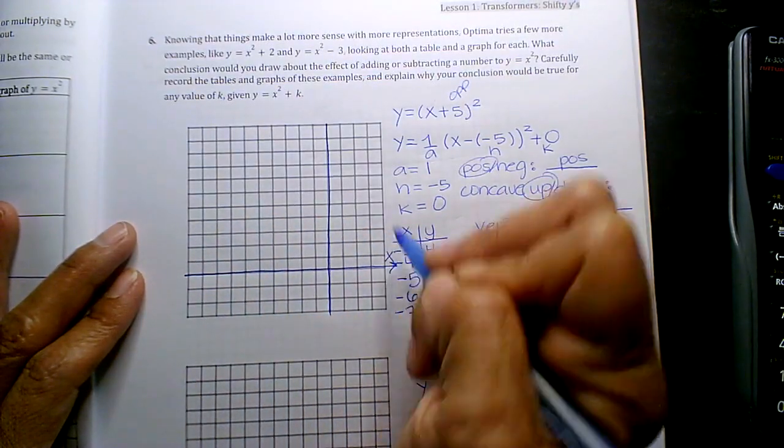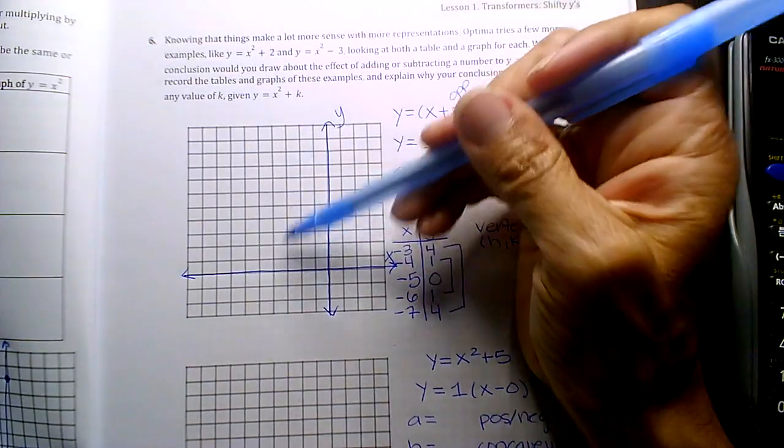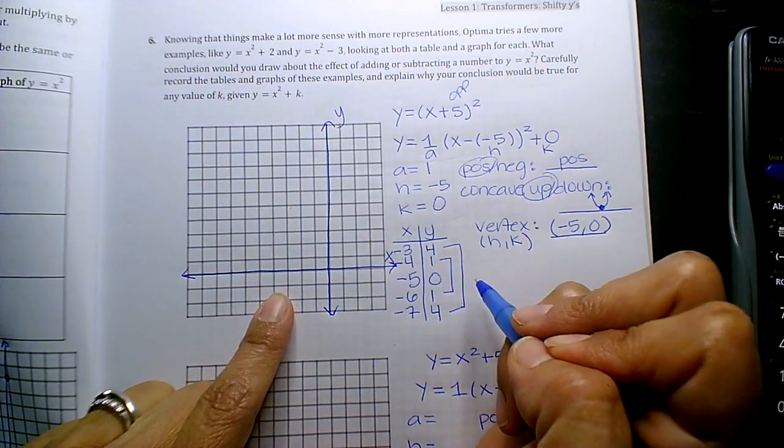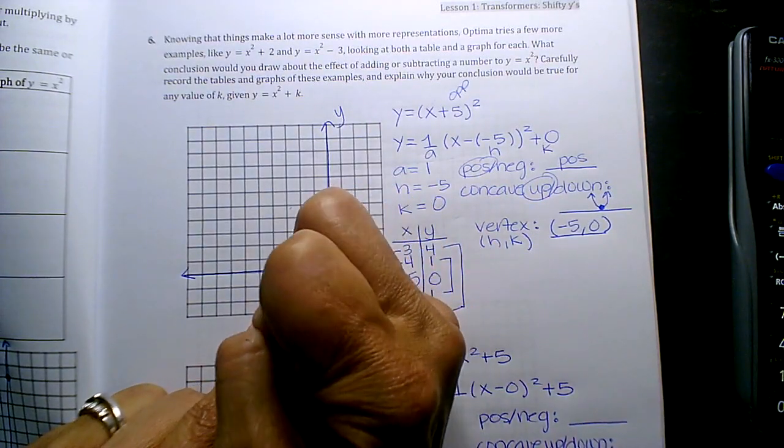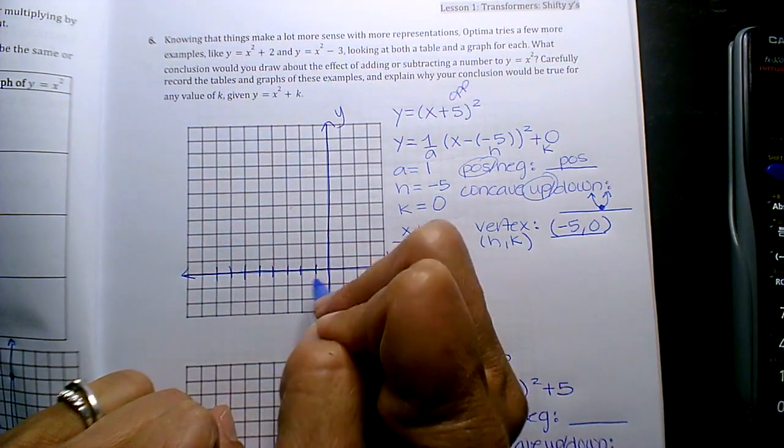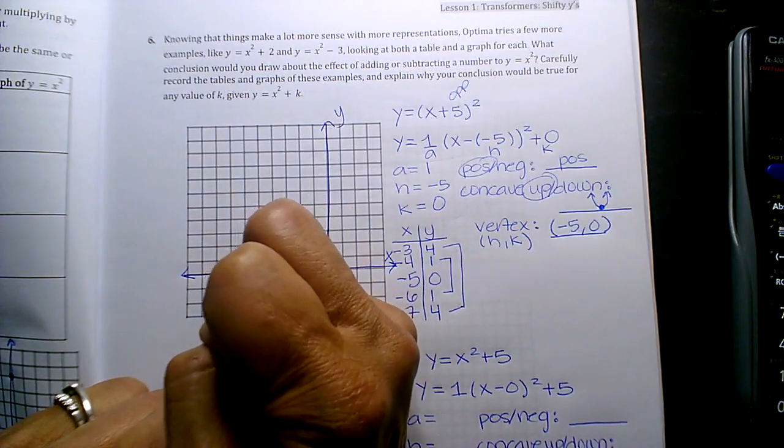So x, y. This is one, two, three, four, right? Okay, so what am I at? Zero. Six, seven, so one, two. Here's negative three, negative four, negative five, negative six, negative seven.